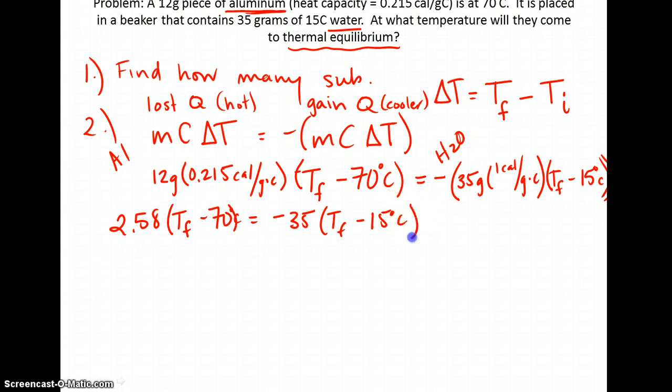If I do my calculations even further, that works out to be 2.58 Tf minus 180.6. What I did was use the distributive property in math. Yes, math comes in handy. And negative 35 Tf minus 525. Again, I multiplied these together using the distributive property.